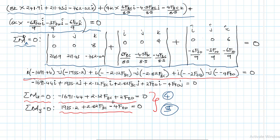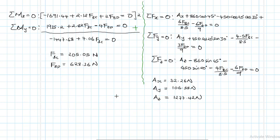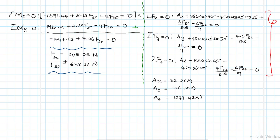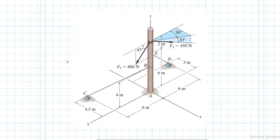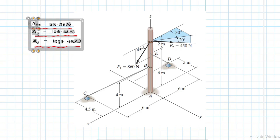Equations four and five involve only FBC and FED, so we solve those two simultaneously first. Once FBC and FED are found, we substitute those values back into the three force equations to solve for Ax, Ay, and Az.